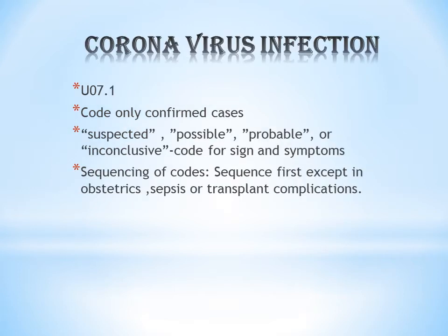Next is Coronavirus Infection, which is a very trending infection currently. The code for Coronavirus Infection is U07.1. Here also the condition is similar to HIV and Zika Virus — you have to code only confirmed cases. If it is documented as suspected, possible, probable, or inconclusive Coronavirus Infection, you have to code for signs and symptoms. For example, if the patient comes with cough and shortness of breath and the provider is suspecting Coronavirus Infection, you cannot give U07.1; instead you have to give codes for shortness of breath and cough.